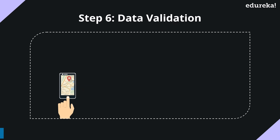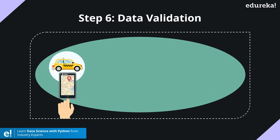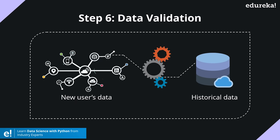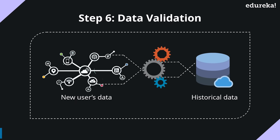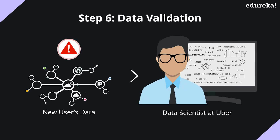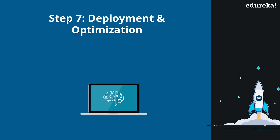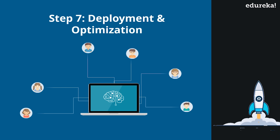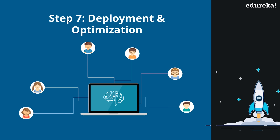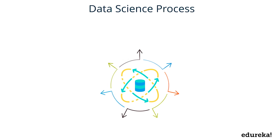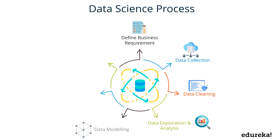Next is the data validation stage, where the model is tested. When a new customer books a ride, the data of the new booking is compared with historic data to check for any anomalies in the surge prices or false predictions. If any such anomalies are detected, a notification is immediately sent to the data scientists at Uber who fix the issue. The final stage of data science is deployment and optimization. After testing the model and improving its efficiency, it is deployed to all users. Customer feedback is then received and any remaining issues are fixed.